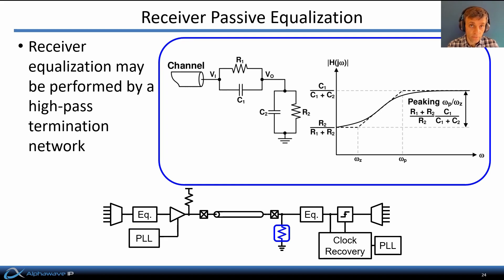Receiver equalization may be performed by a variety of constituent components. For example, it can be performed by a high-pass network in the termination of the transmission line. RC components are chosen and combined to form a high-pass response as shown here.